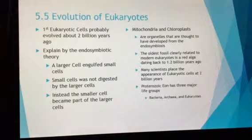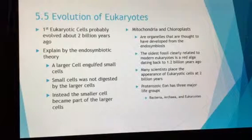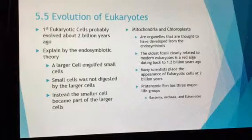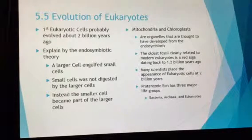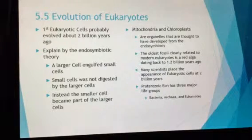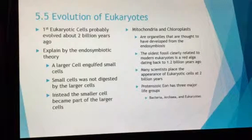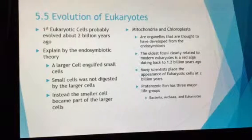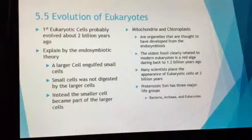Our oldest fossils are what you know as red algae. Algae is a protist — it's not actually a bacteria and it's not actually a plant, it's a protist cell. Many scientists believe that eukaryotic cells appeared about two billion years ago. We have fossil records that show that, and we also believe there are three major life groups: bacteria, which is regular bacteria; archaea, which is bacteria that lives in harsh environments; and then eukaryotes.